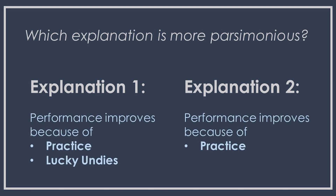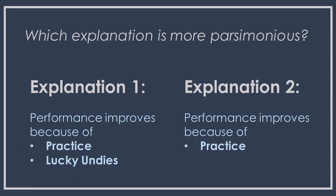Now, as a skeptical person, what do you think is really going on here? There are two possible explanations we could use to explain your change in performance. In the first explanation, performance improves because of practice and because of the lucky undies. The second explanation is that performance improves because of practice alone. We have two explanations that both could explain the data. Until we have evidence to the contrary, which explanation is more parsimonious? Well, obviously explanation two — that performance improves because of practice — is the parsimonious one.